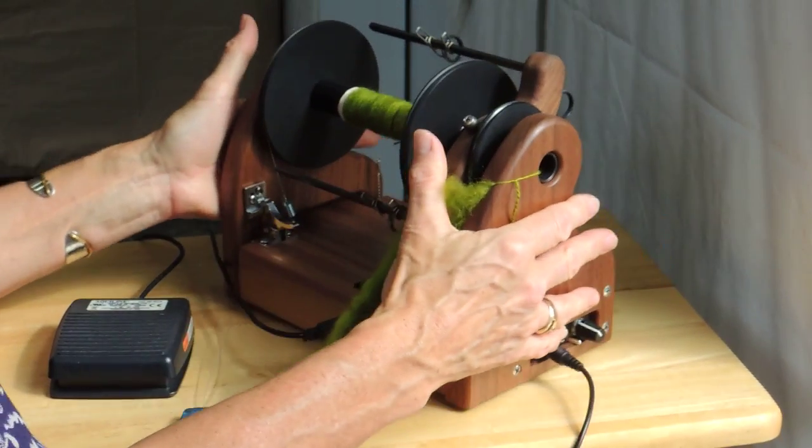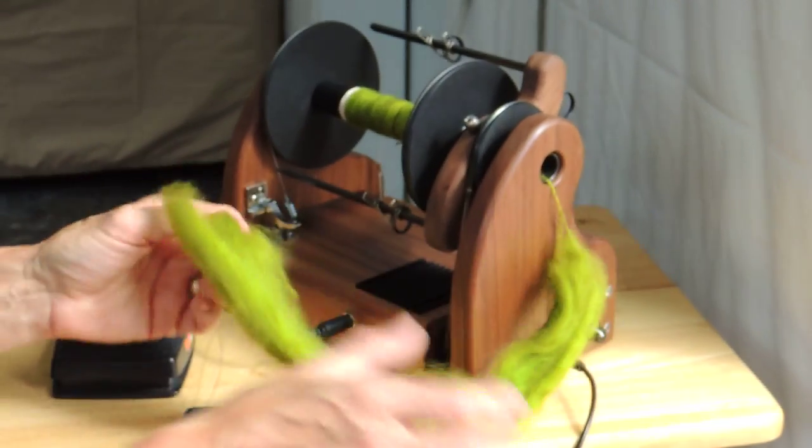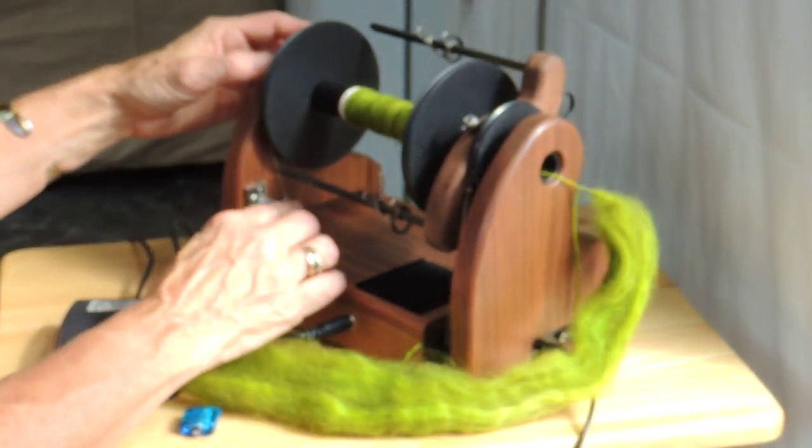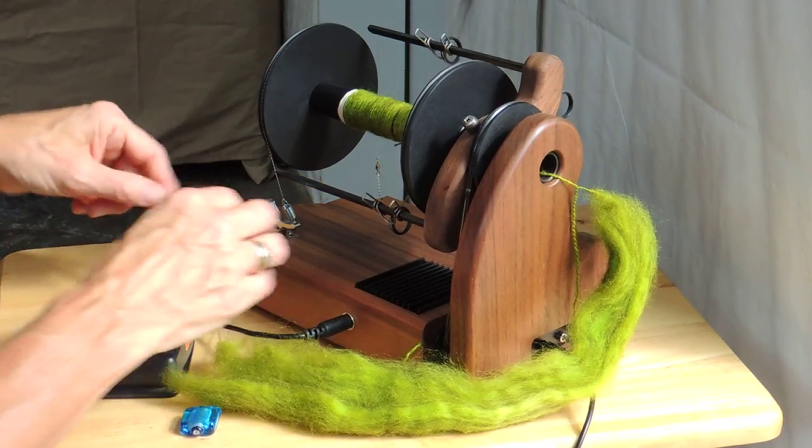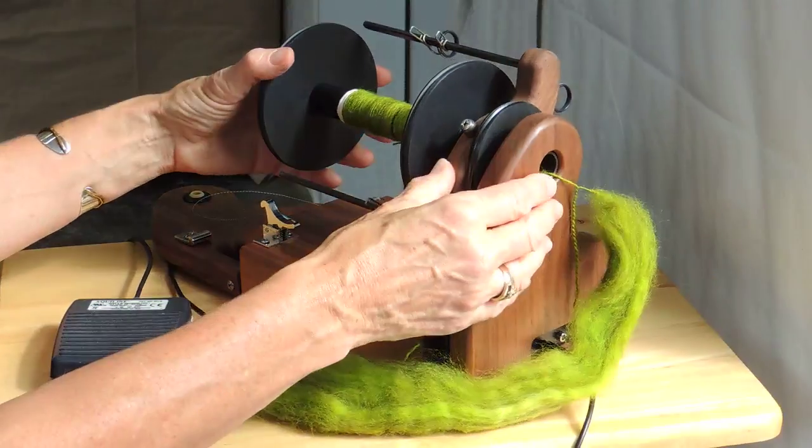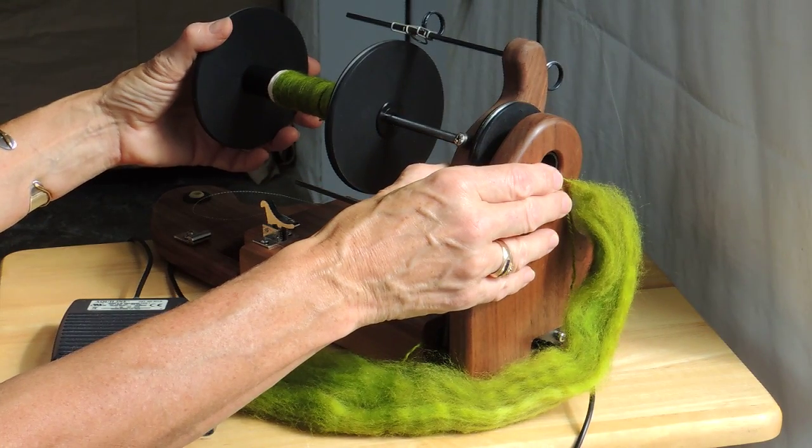If I want to change bobbins or flyers all I do is open this latch and drop the back, remove the brake band and then just slide the bobbin right off.